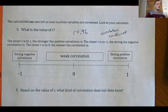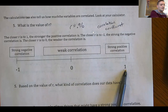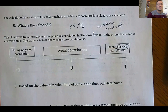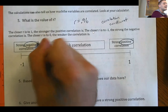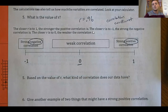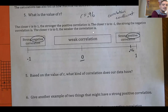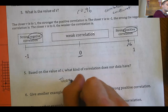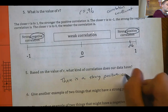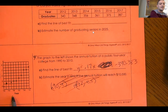The correlation coefficient is the number that represents our correlation. r can be anything from negative 1 up to 1. If r is close to 1, that is a strong positive correlation. If r is close to negative 1, it is a strong negative correlation. If r is close to zero, that is a weak correlation. We got r = 0.96, which is really close to 1, so we would say there is a strong positive correlation.